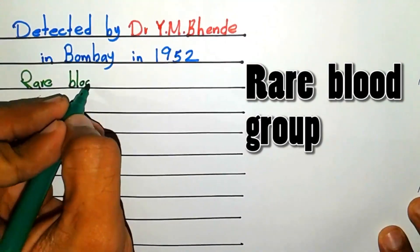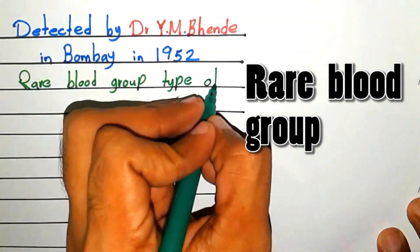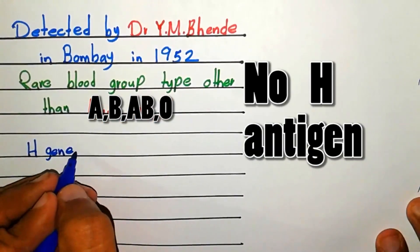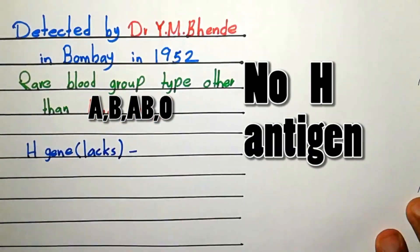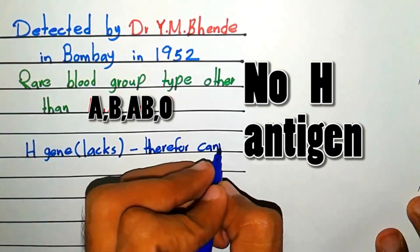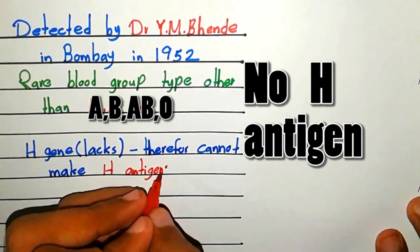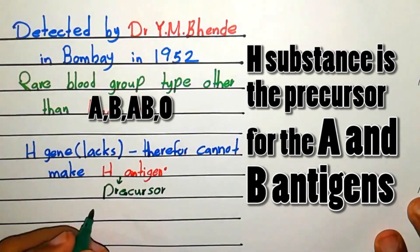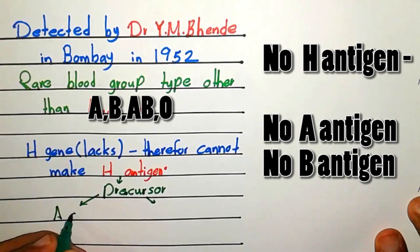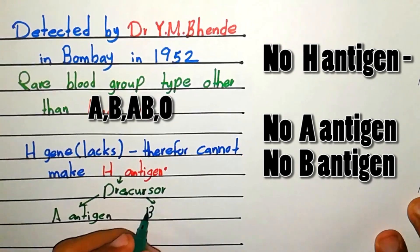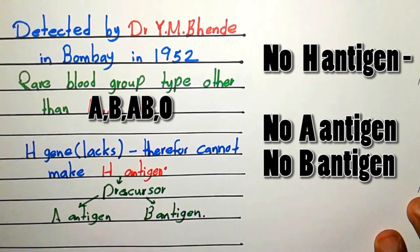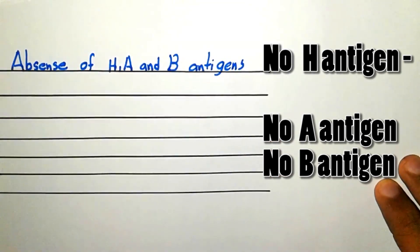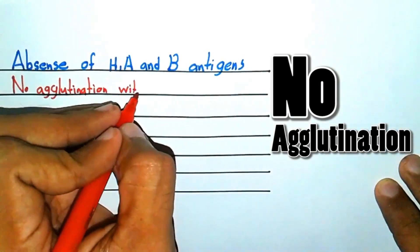It is a rare blood group type, other than A, B, AB, and O. The Bombay blood group lacks the H gene and therefore cannot make the H antigen. Since the H substance is the precursor for the A and B antigens, these antigens are also not made. There are no H, A, or B antigens in the Bombay blood group, so there is no agglutination with antibody A, antibody B, or antibody H.